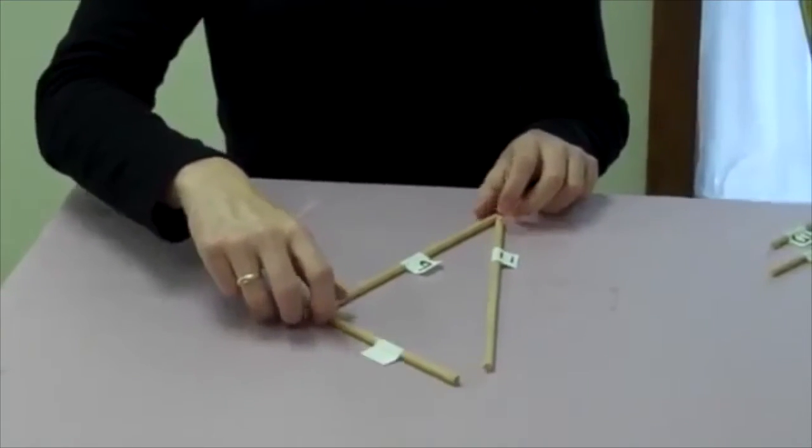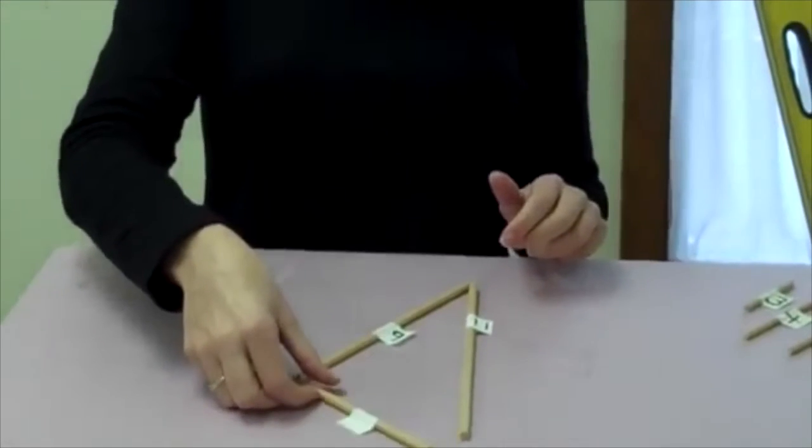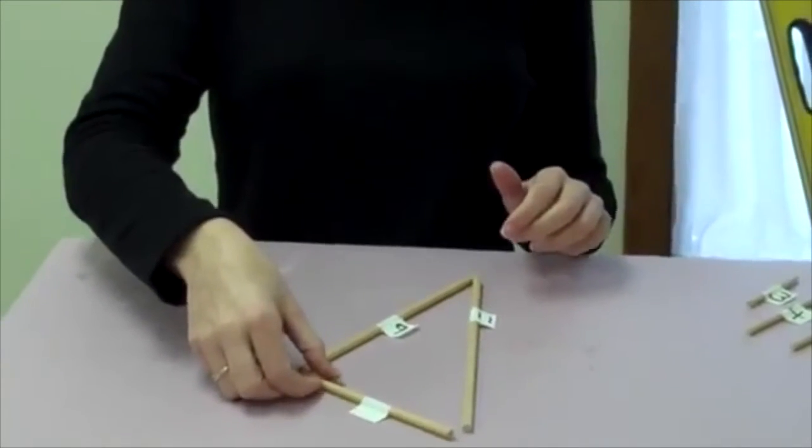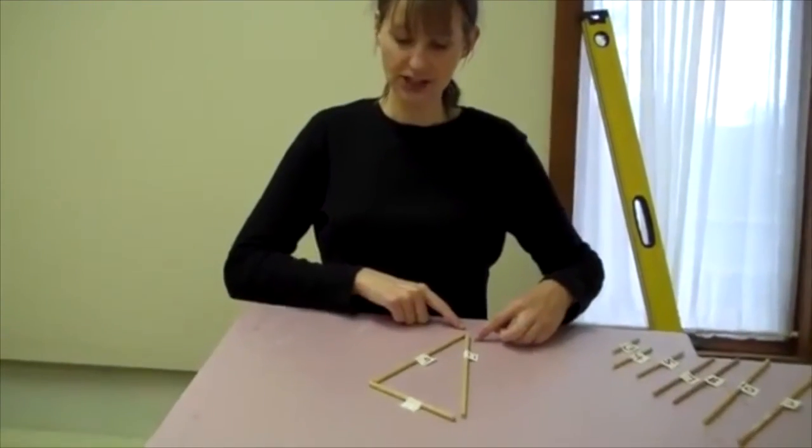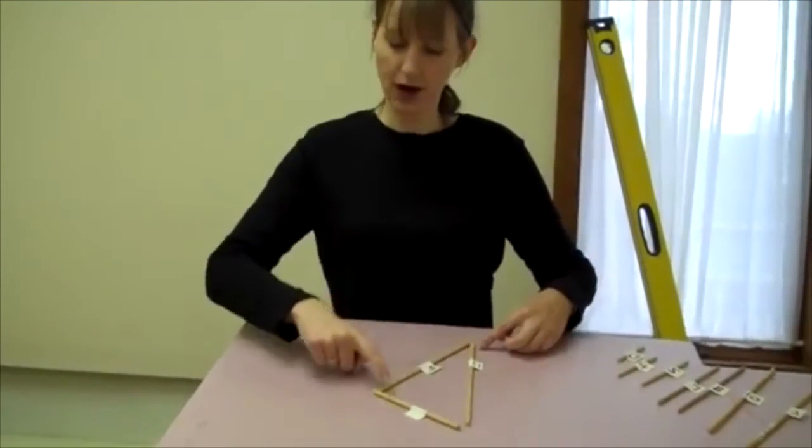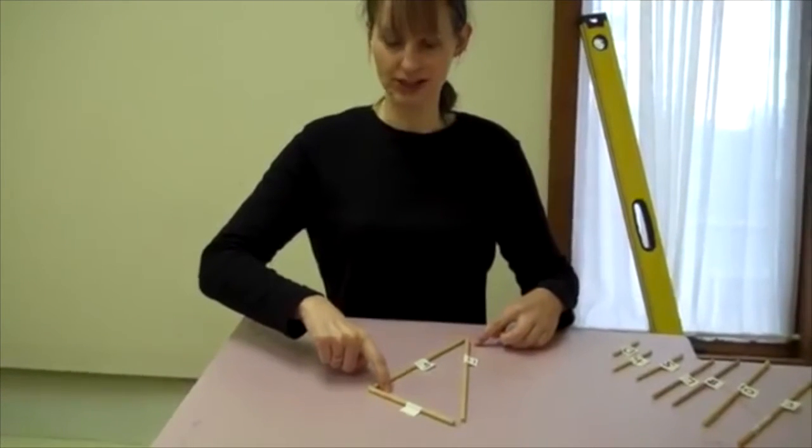But thinking back to the hinge theorem that we talked about earlier, we can apply that same principle within the triangle. And that property is going to tell us that the largest angle is going to be opposite the longest side. So in this case, I have a side of eleven. The largest angle is going to be opposite the side of eleven, so right here is going to be my largest angle.